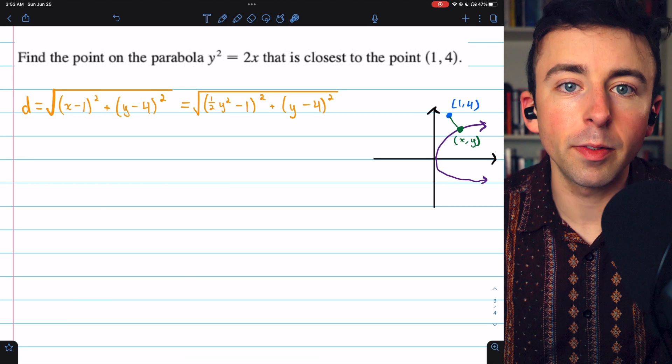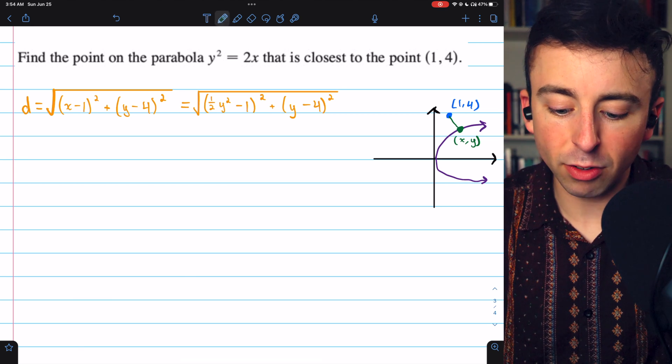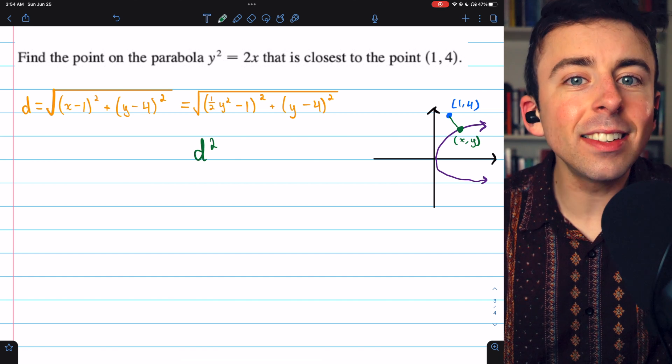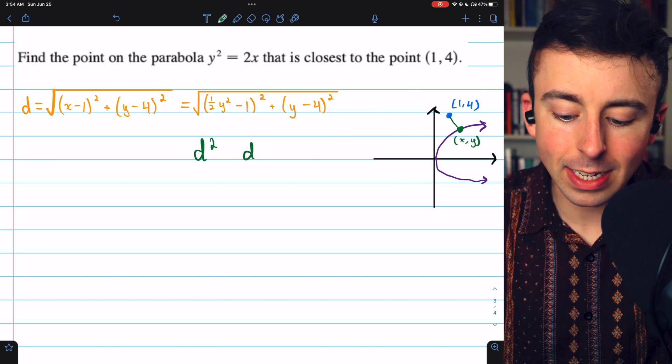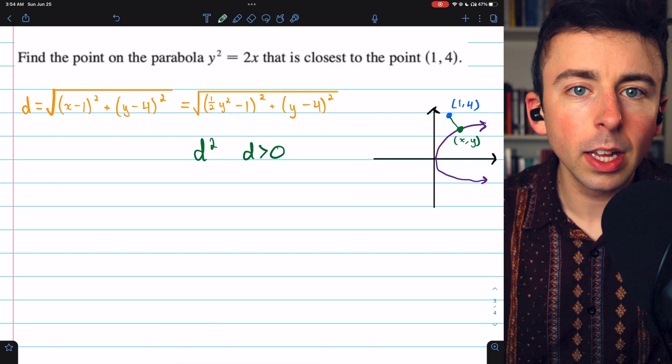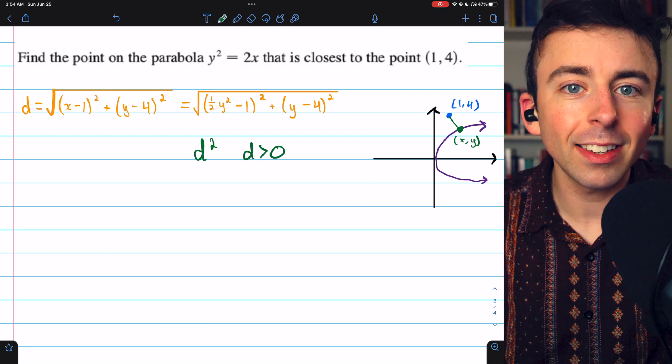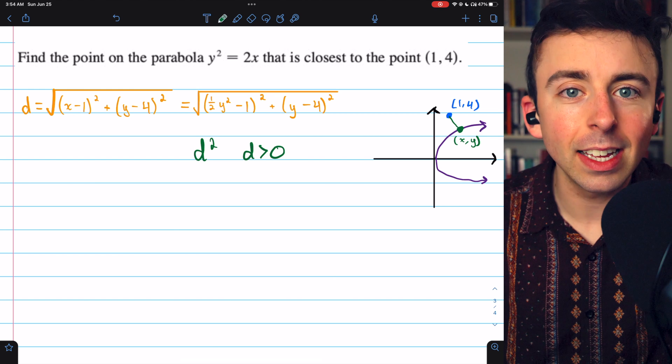And d squared is increasing whenever d is greater than 0, which means wherever d squared is smallest is also where d is smallest.